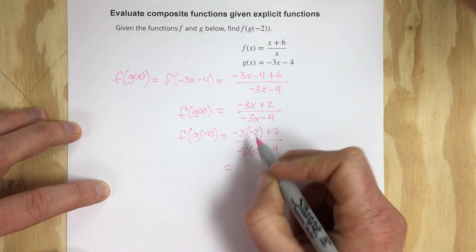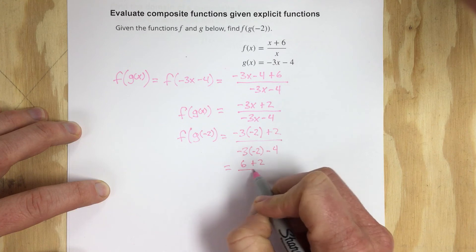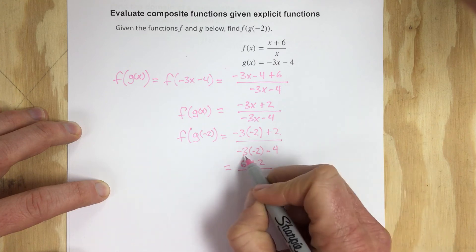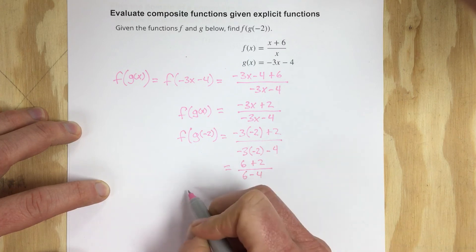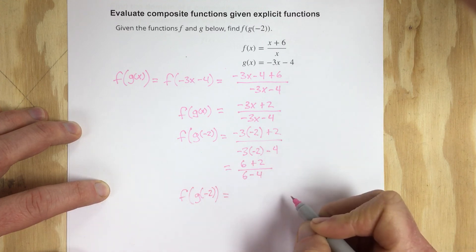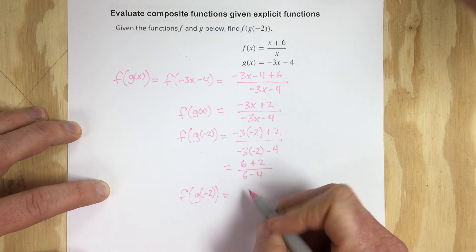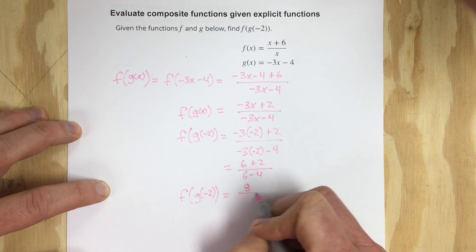This will be 6 plus 2 divided by that would be 6 minus 4. So I can say now that f of g of negative 2 is equal to 6 plus 2 which is 8 over 2 which is 4.